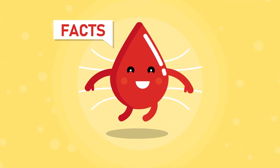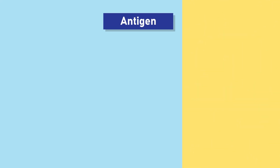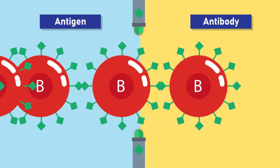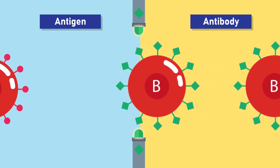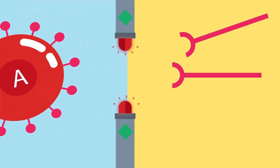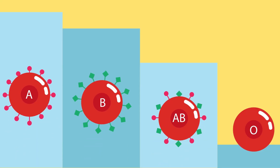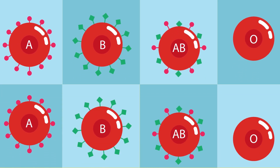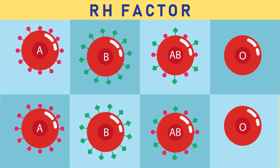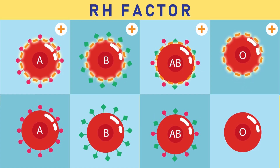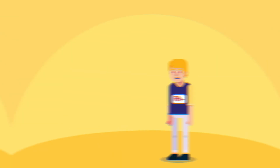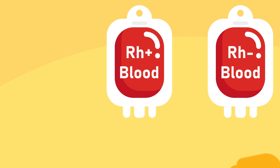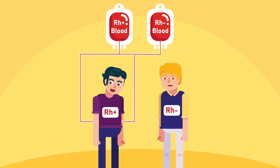Blood group facts: there are eight different common blood types, which are determined by the presence or absence of certain antigens — substances that can trigger an immune response if they are foreign to the human body. Since some antigens can trigger a patient's immune system to attack the transfused blood, safe blood transfusions depend on careful blood typing and cross-matching. An interesting factor is the Rh factor, which can be either present (positive) or absent (negative). In general, Rh negative blood is given to Rh negative patients, and Rh positive or Rh negative blood may be given to Rh positive patients.